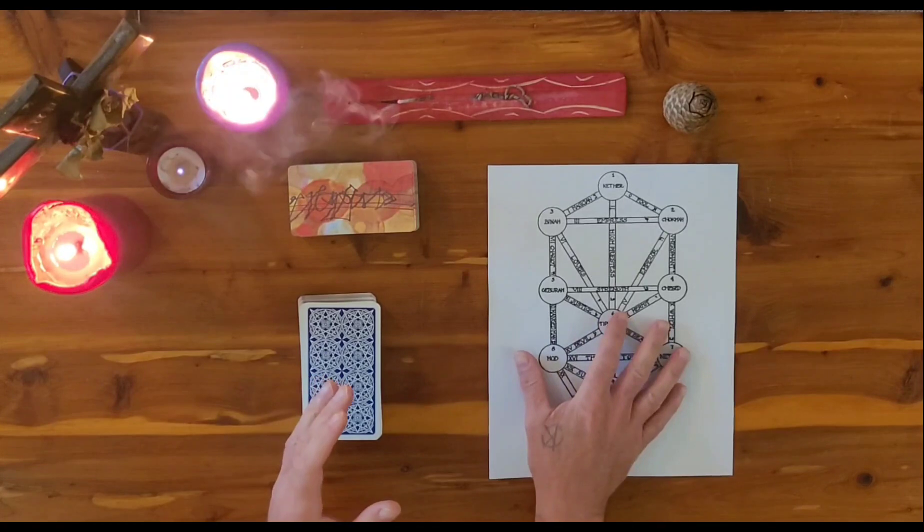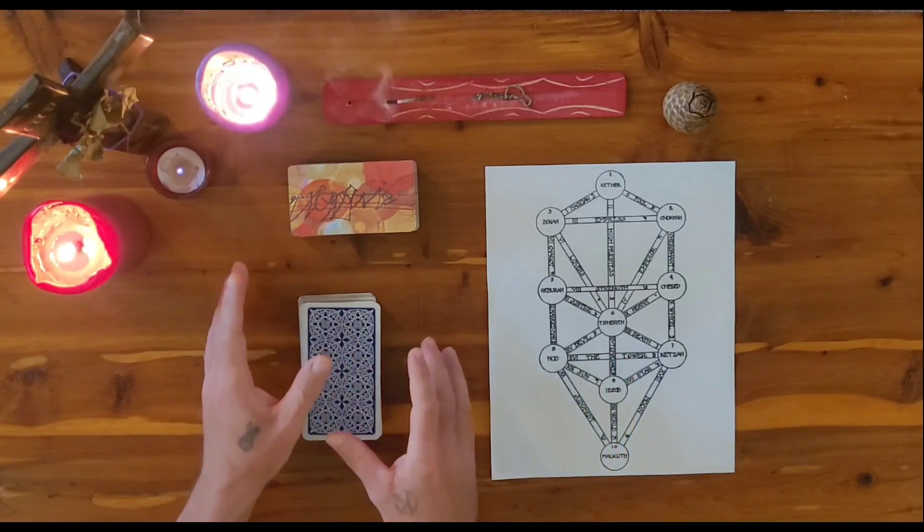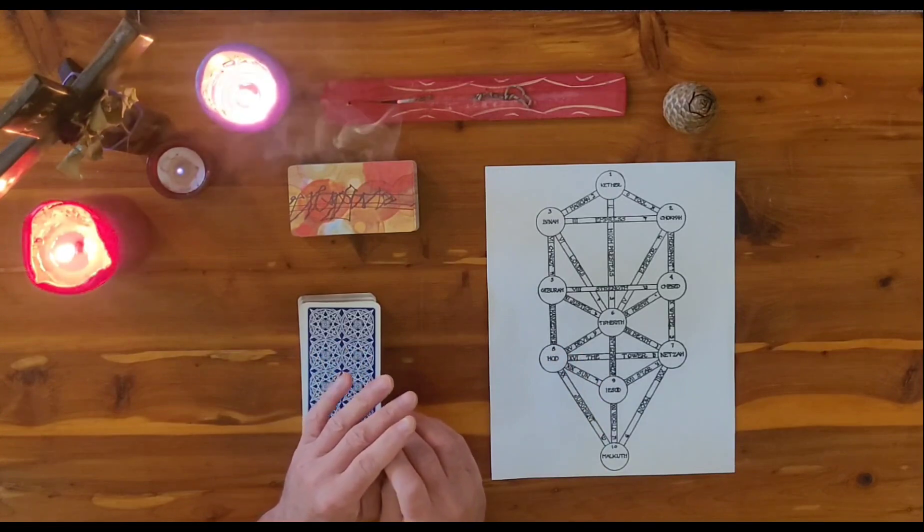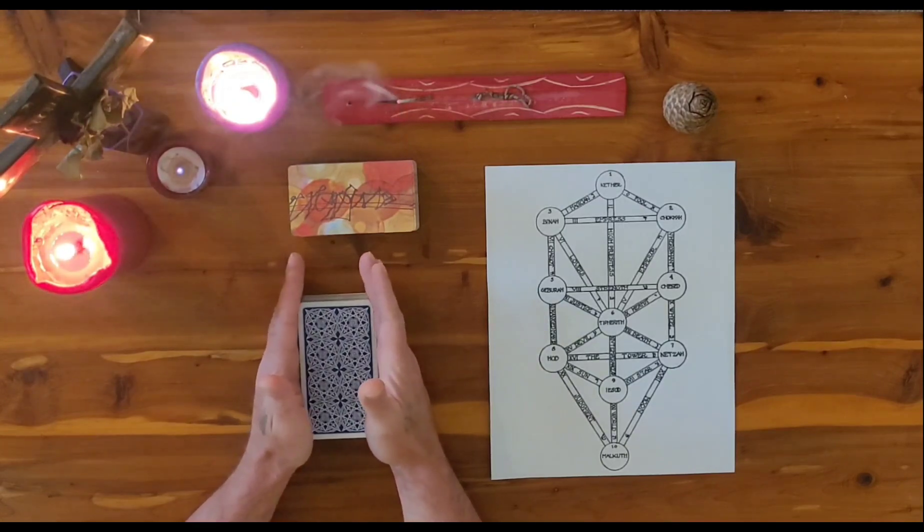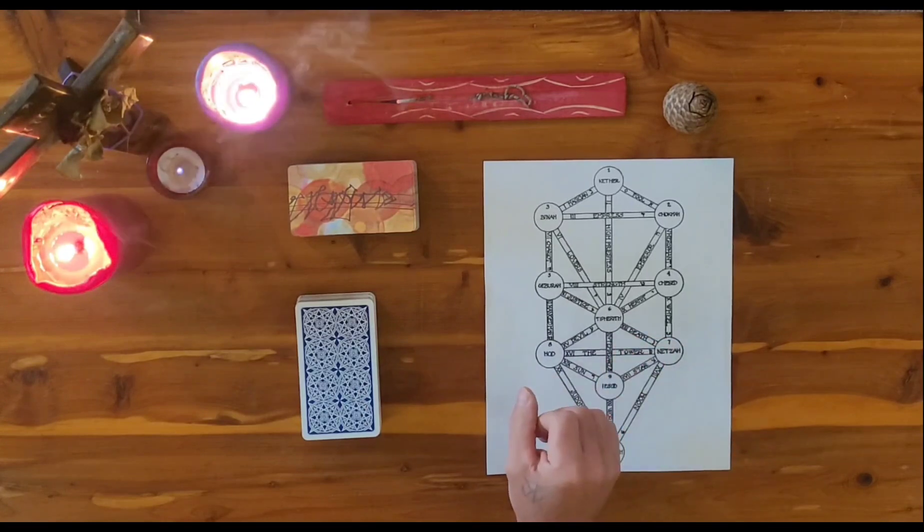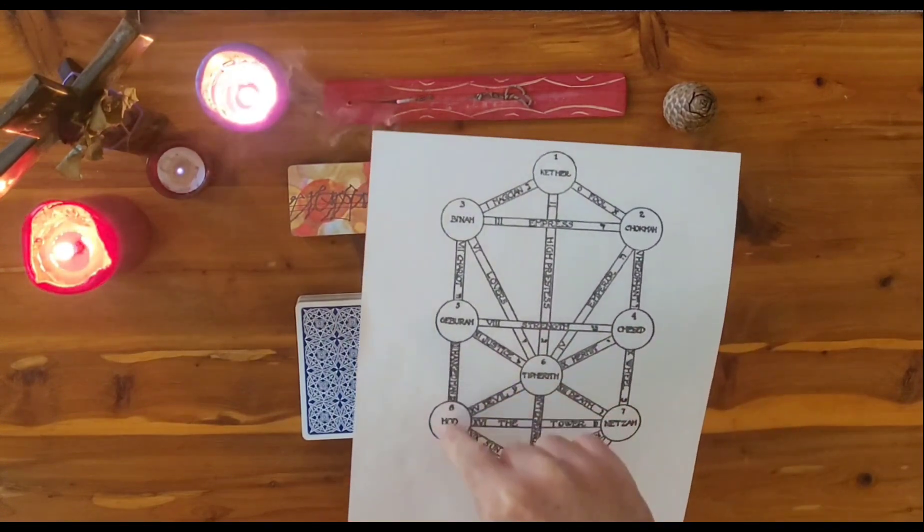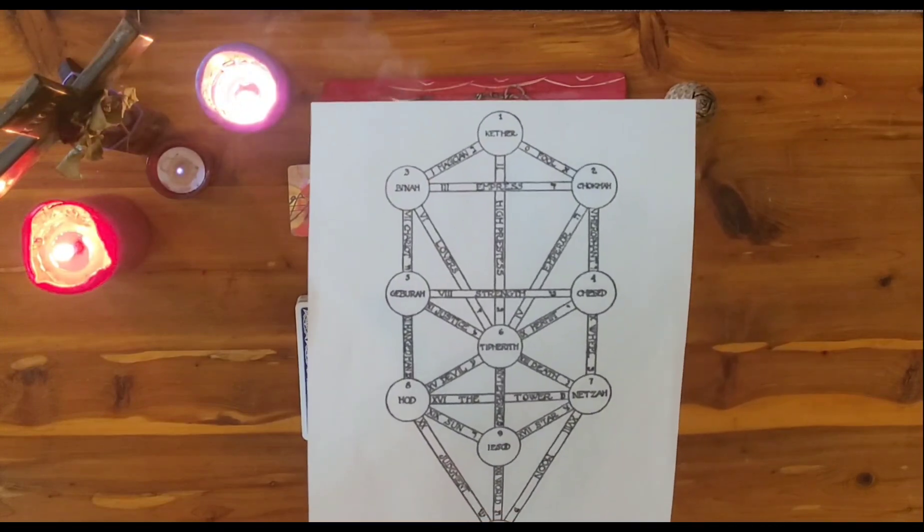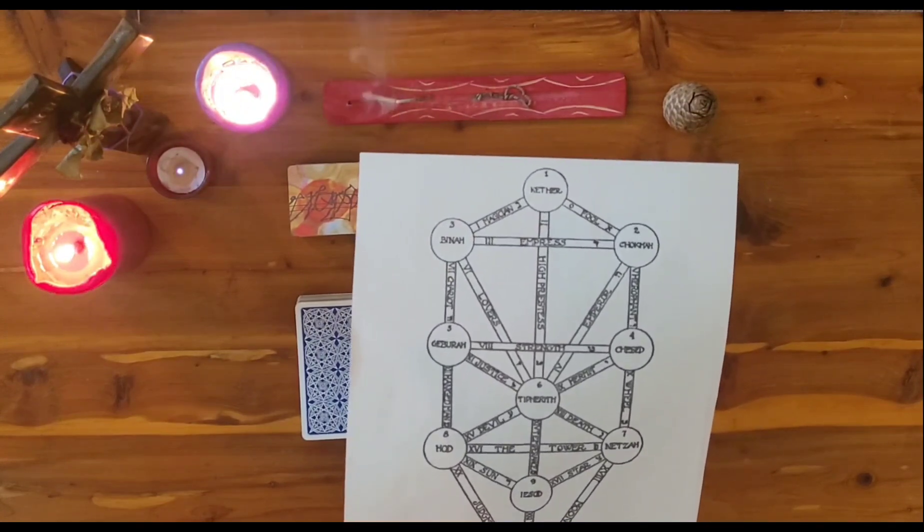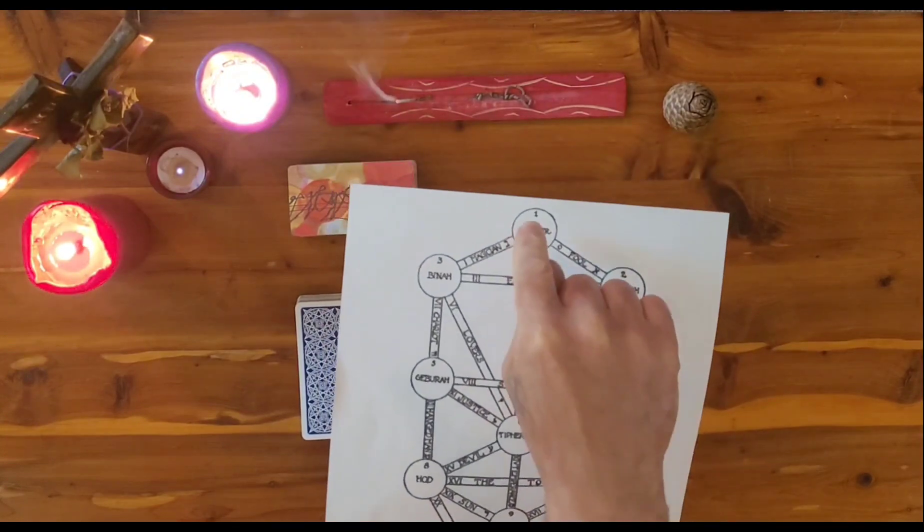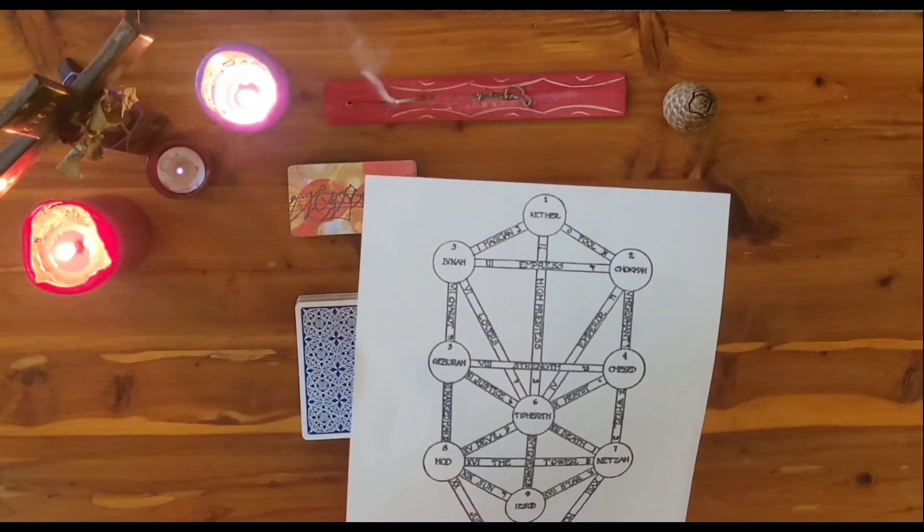And so here I have a diagram of the tree of life. And I'll explain now how this tree of life comes into play in the tarot readings that I do. So it's not really common knowledge yet, but the tarot, the traditional tarot deck, is a reflection of the Kabbalic tree of life. If you notice here, there are 10 spheres and there are all these paths that go in between these spheres. And there are 22 paths, just the same as there are 22 major arcana in the tarot deck.